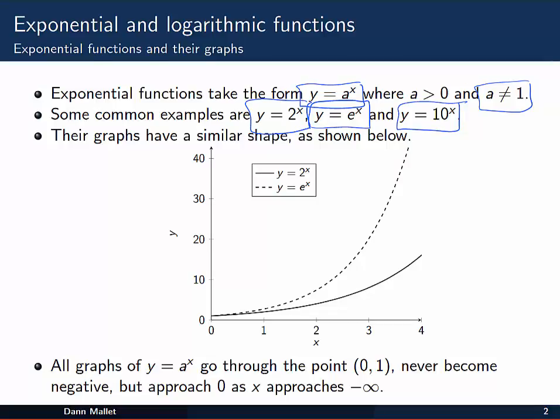The graphs of all of these exponential functions, a to the x, have a similar shape and look something like the graphs given here. 2 to the x is shown as the solid line and the more steeply increasing e to the x as the dotted line. 10 to the x rises much more quickly again.